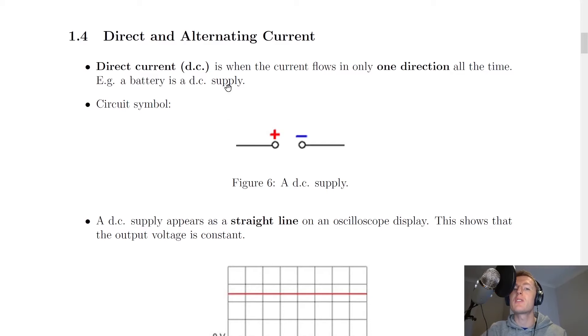So direct current, first of all DC, is when the current flows in one direction all the time. For example, a battery is a DC supply. So in the majority of circuits that we talk about in the electricity topic, we're going to have DC, direct current, and that's because our current, i.e. our electrons, are traveling in one direction at all times.